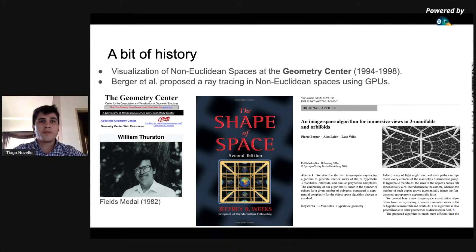Historically, the main attempts for visualization of non-Euclidean space took place at the Geometry Center from 1994 to 1998. This program, under the leadership of William Thurston, studied and disseminated modern geometry.